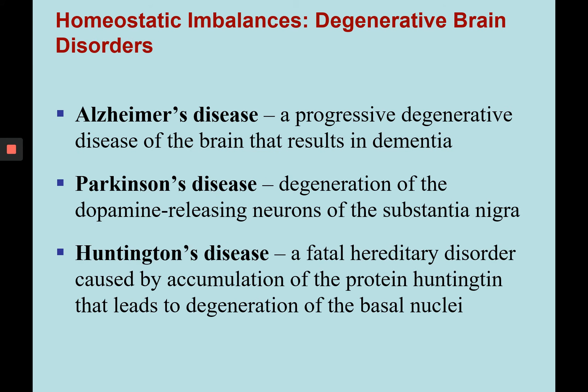Next, we're going to look at some degenerative brain disorders: Alzheimer's disease, Parkinson's disease, and Huntington's disease. Alzheimer's disease results in dementia and is caused by a progressive degenerative disease that attacks different parts of the brain, including parts of the basal nuclei. Parkinson's disease is caused by degeneration of basal nuclei like the substantia nigra, which are dopamine-releasing neurons. Huntington's disease is a fatal hereditary disorder caused by accumulation of the protein huntingtin, and that buildup causes degeneration of other basal nuclei.